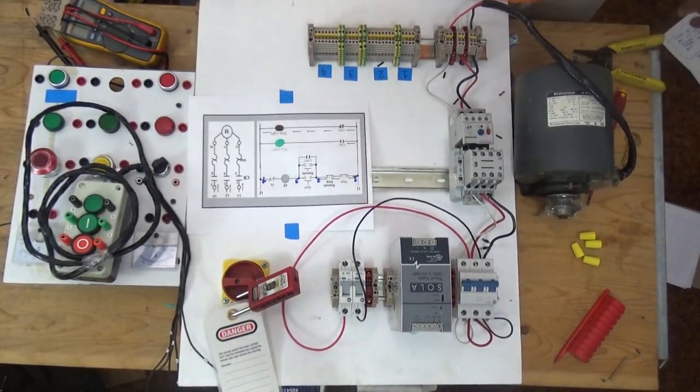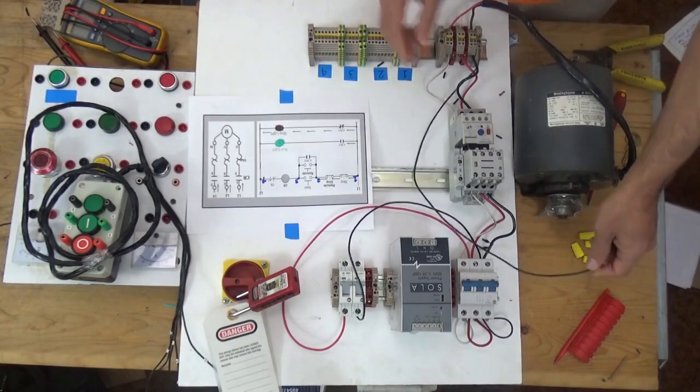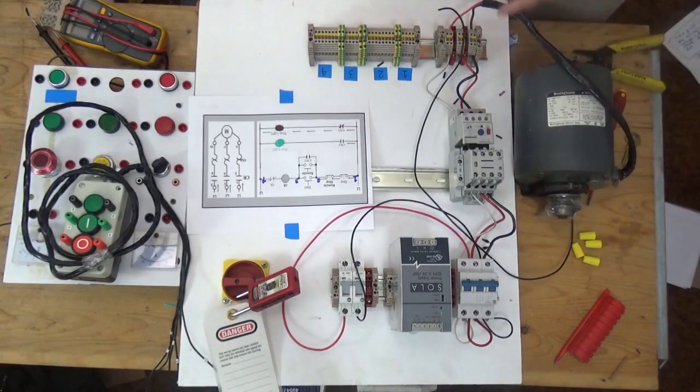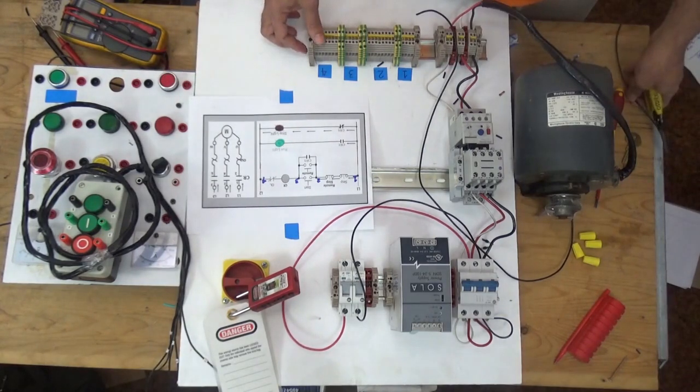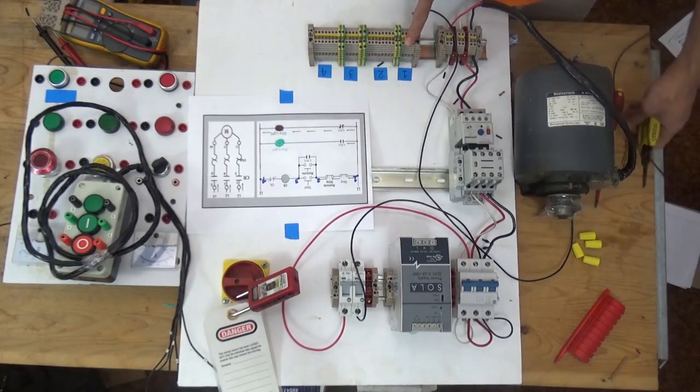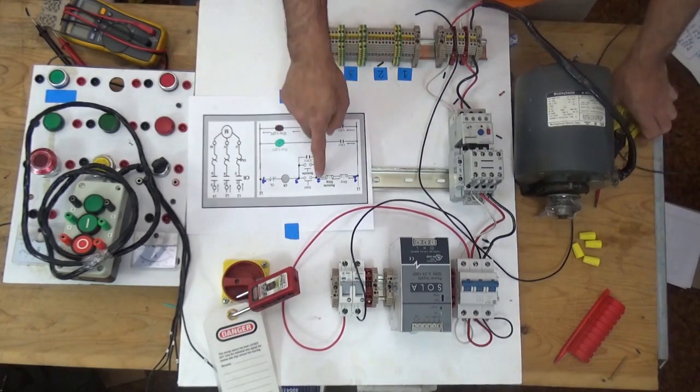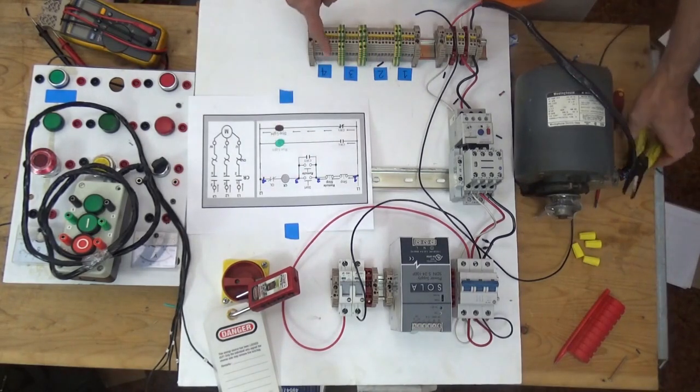The next thing we are going to do is follow this schematic diagram. Anyway, I put markings to make it easier for me to wire. You see this one, line one. I put this terminal block: one, two, three, four.